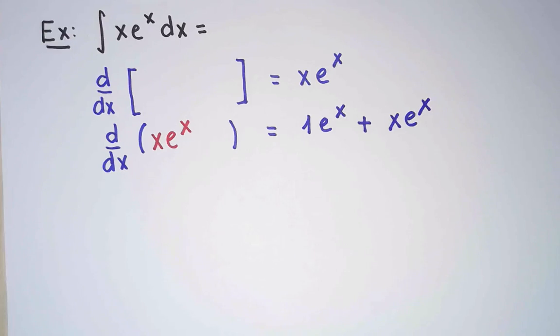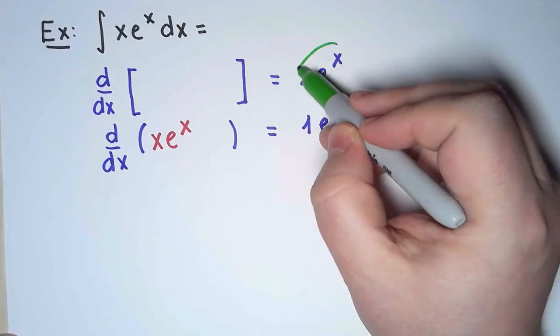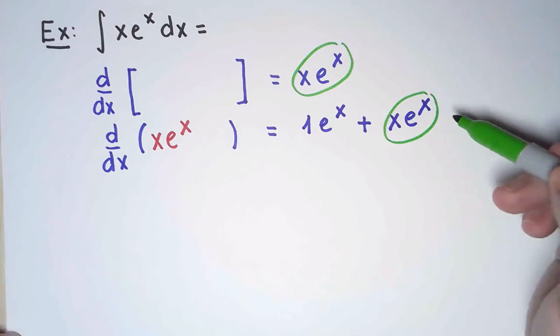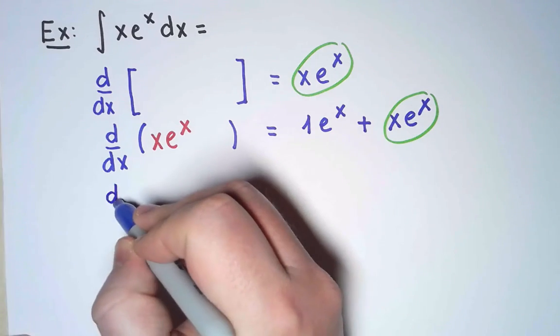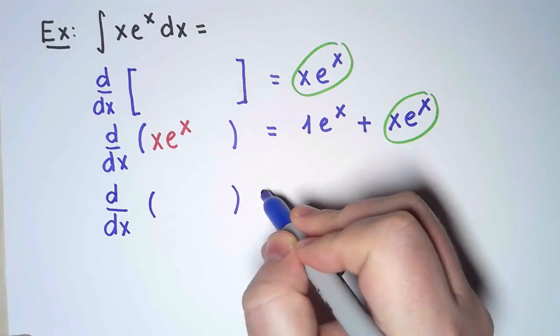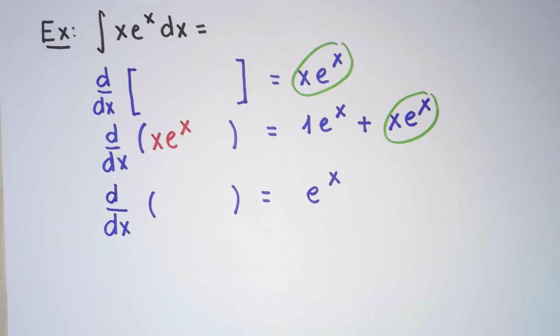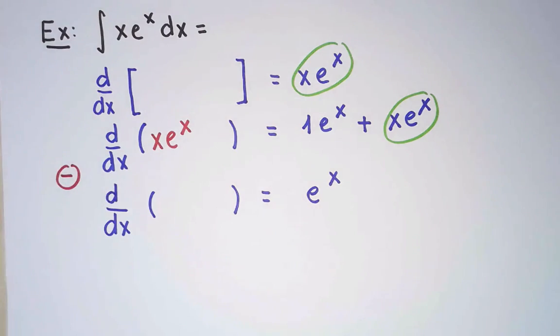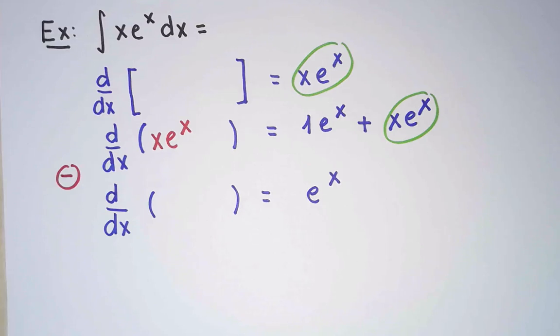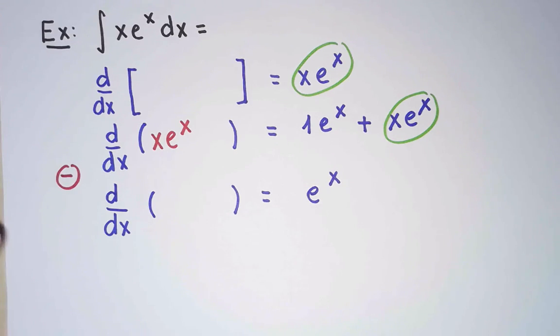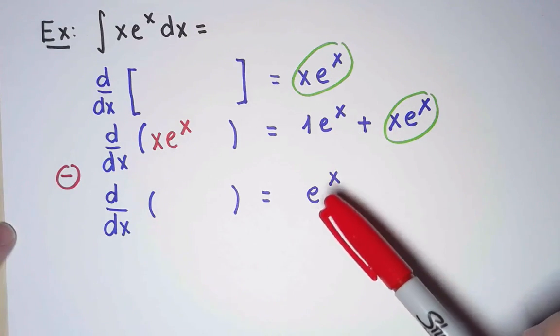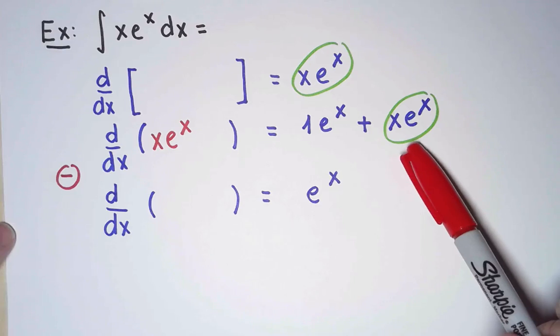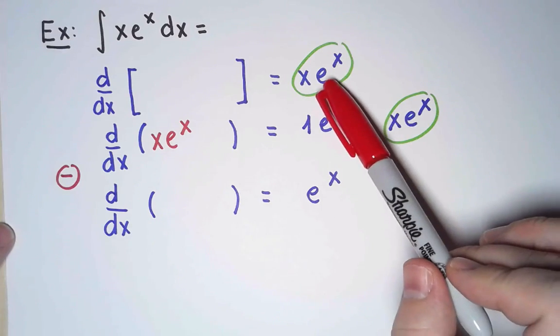And now look at what happened. The derivative I want is the second term in this sum. This gives me an idea. If I can find a second function whose derivative is exactly e to the x, then all I have to do is subtract the two functions. And then the derivative will be e to the x minus e to the x plus x e to the x, which is exactly what I wanted.